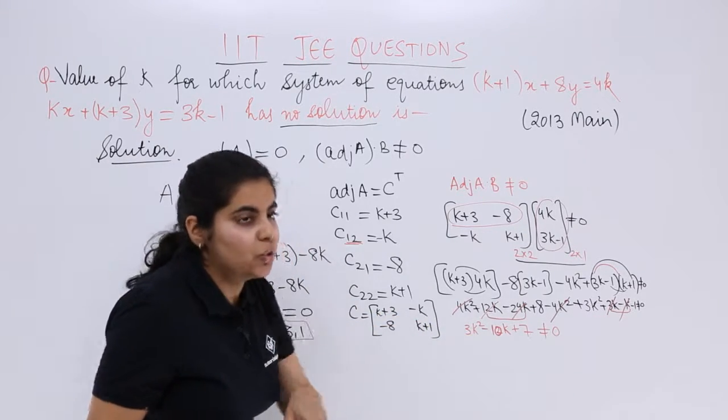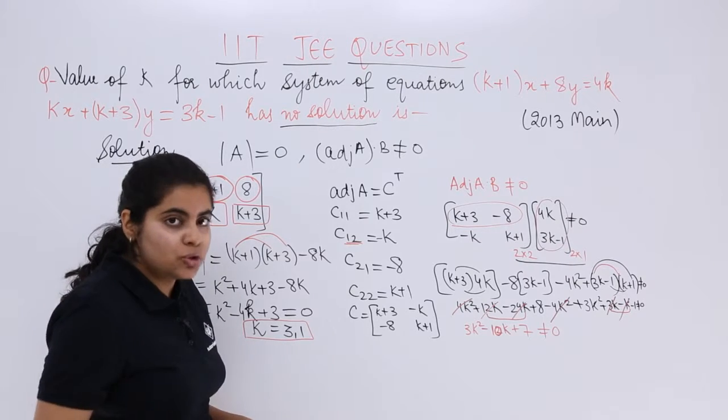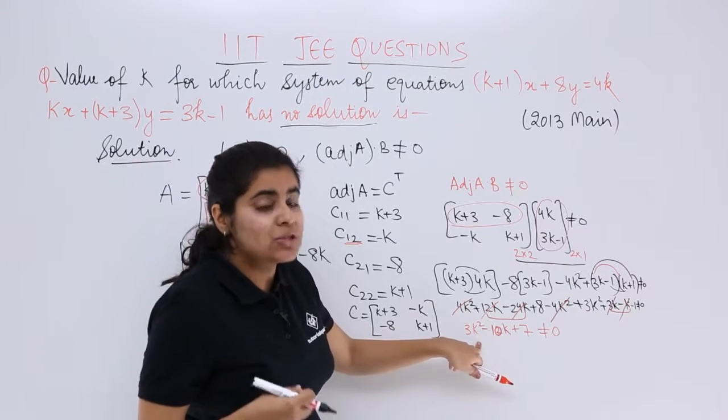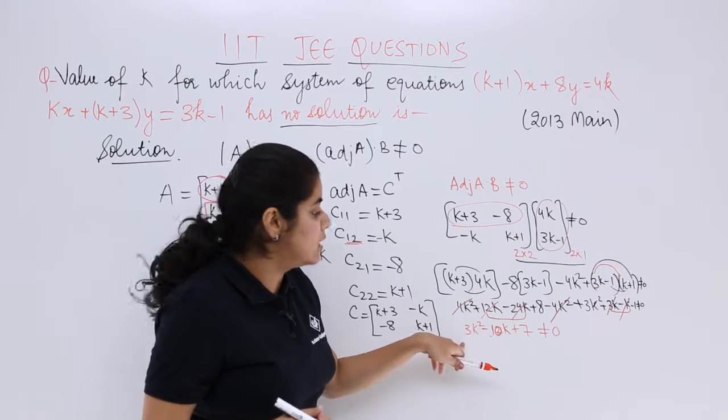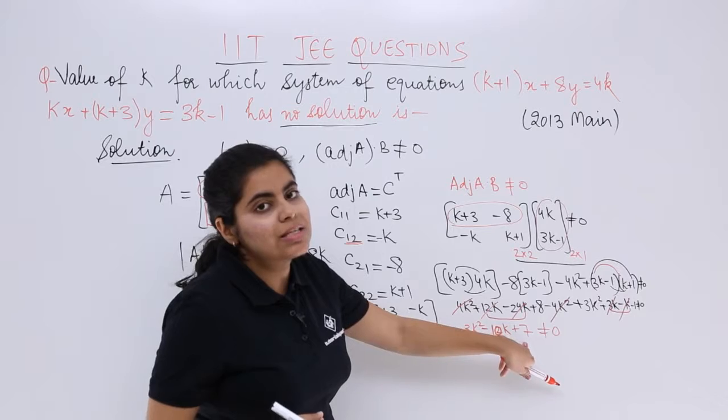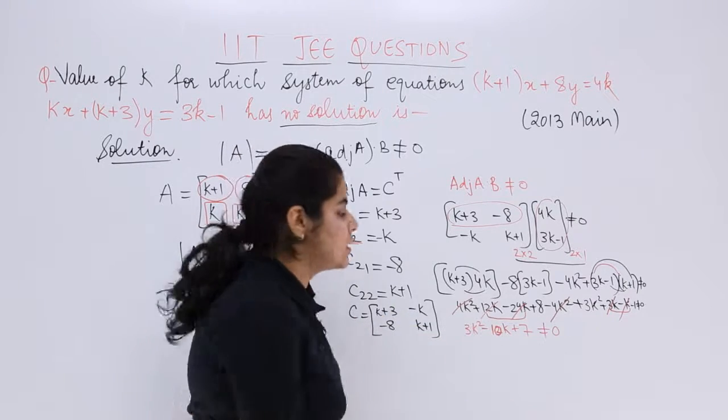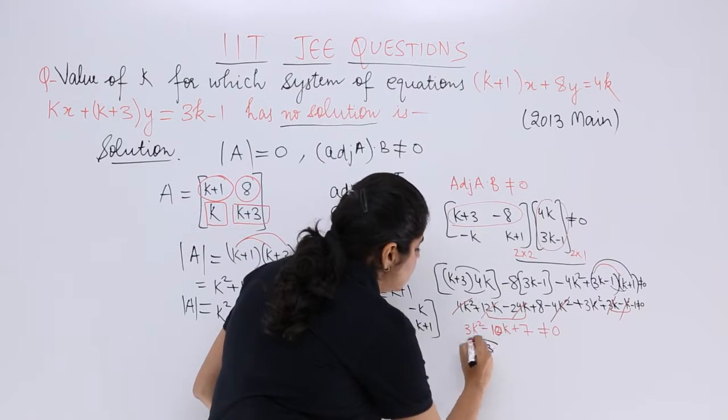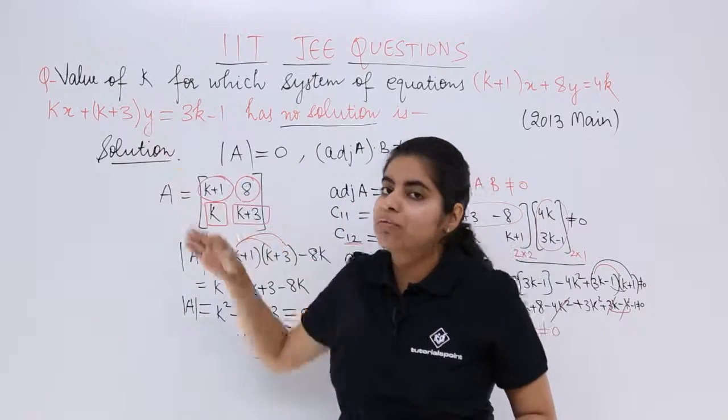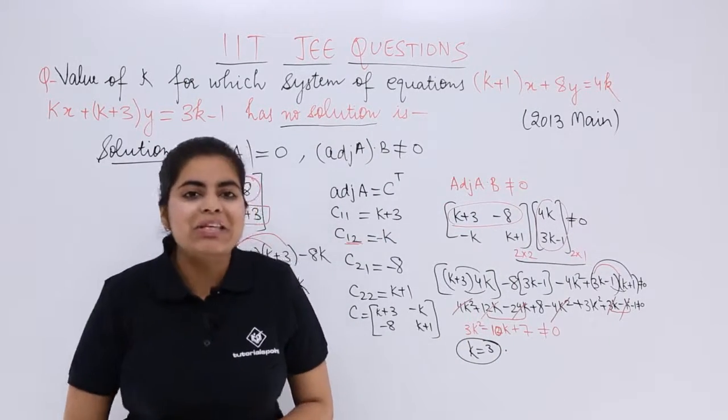So k=3 should be the answer. Let's check: 3² = 9, 9×3 = 27, 27 - 30 = -3. -3 + 7 = +4, which is not equal to 0. So k=3 is my answer. The value of k is k=3.